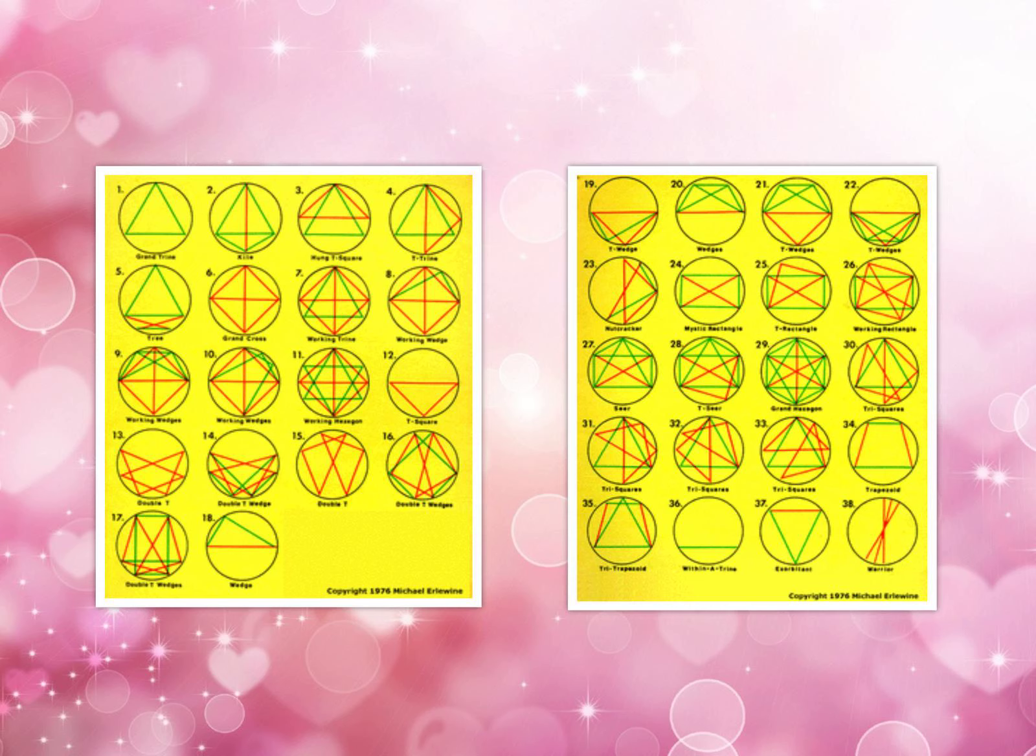The list can continue with more complicated geometric patterns, such as the Star of David. For example, you have a kite, and the other brings two more planets to form the Star of David for you.